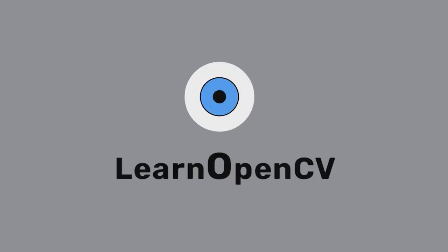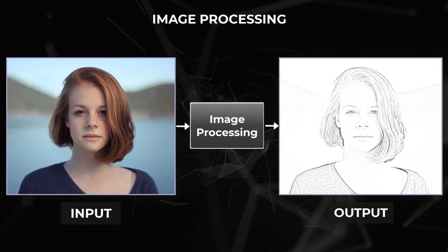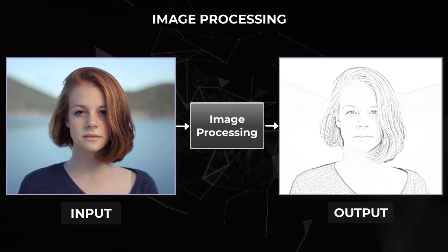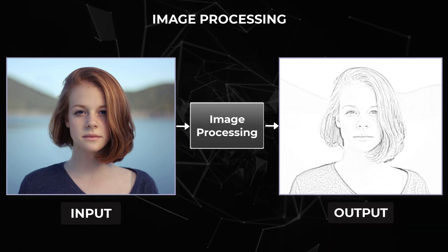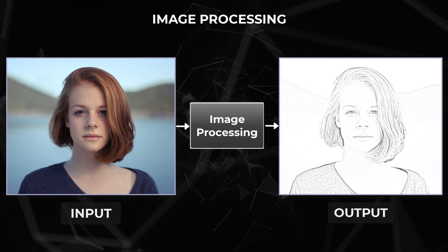What is the difference between computer vision and image processing? In image processing, the input is an image and the output is also an image. For example, we get a new output image when we apply a filter to an input image. Therefore, applying a filter to an image is part of image processing.